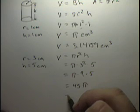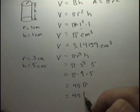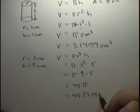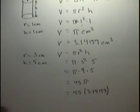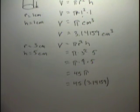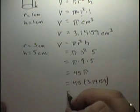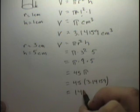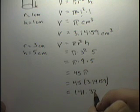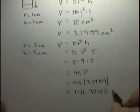Knowing that pi is 3.14159, we can obtain the value using a calculator. The volume is 141.37155 cubic centimeters.